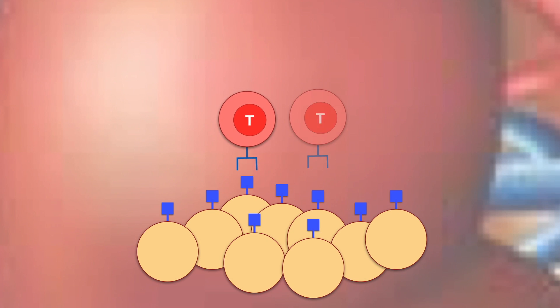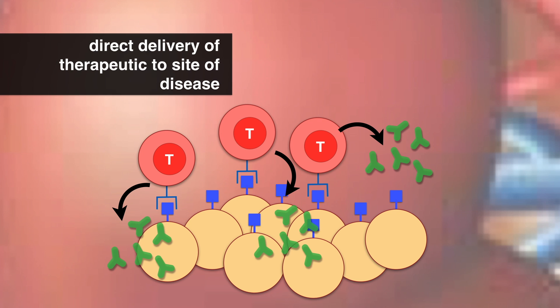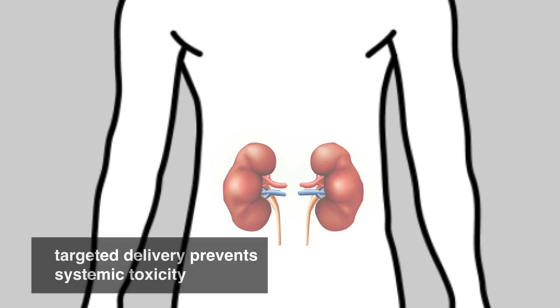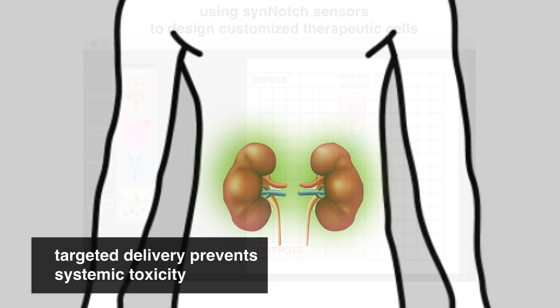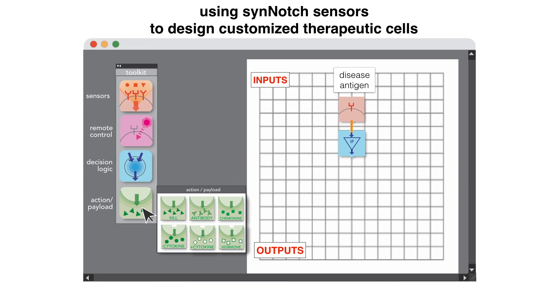Direct delivery concentrates these therapeutics at the site of disease. Targeted delivery could also prevent systemic toxicity, the major problem with many of these powerful drugs. These molecular sensors can be used in diverse ways to build a huge variety of therapeutic T-cell programs.